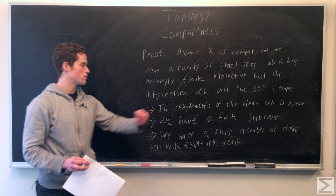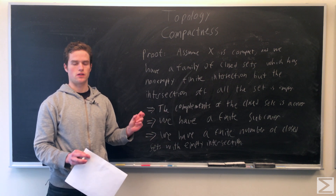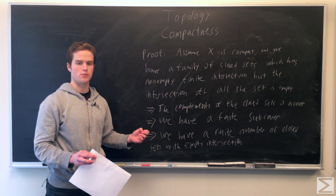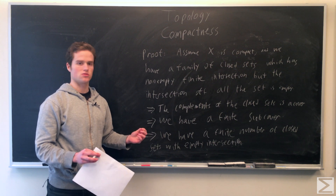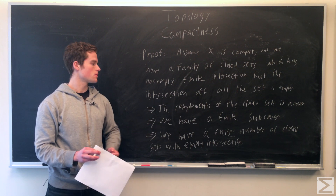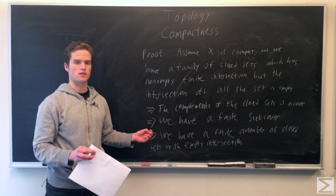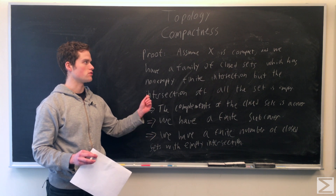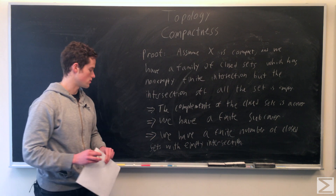We take the complement of those finitely many open sets. Since these open sets cover X, the intersection of all their complements is empty. So we have a finite number of closed sets with empty intersection, which is a contradiction. That proves one direction.